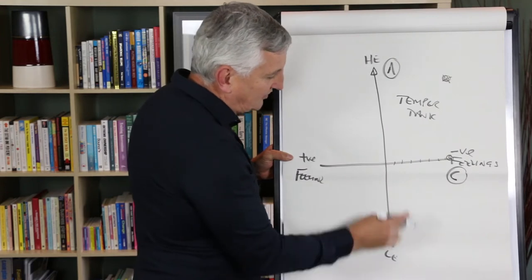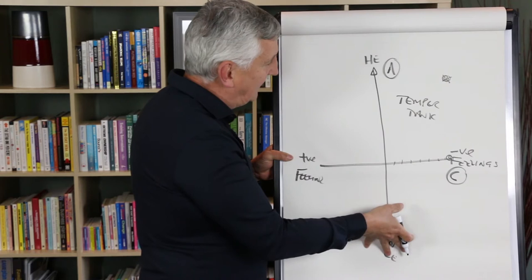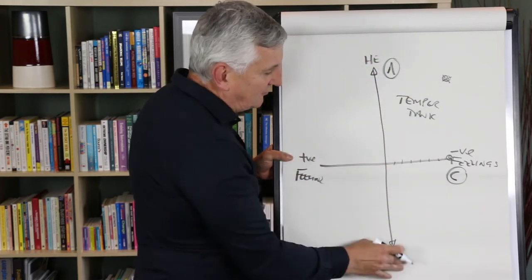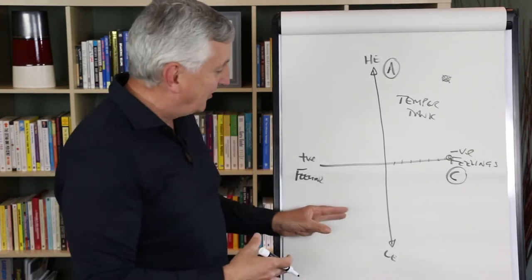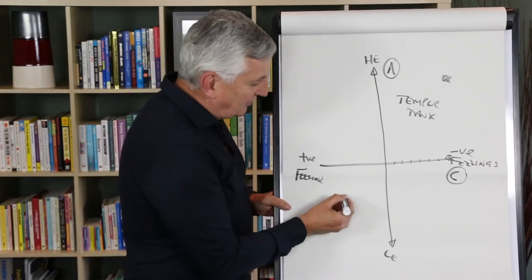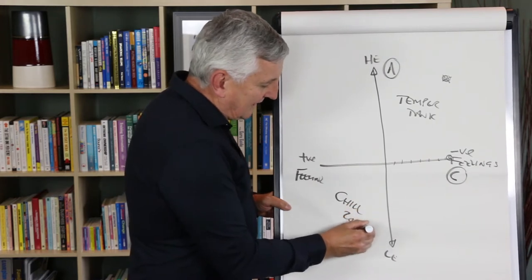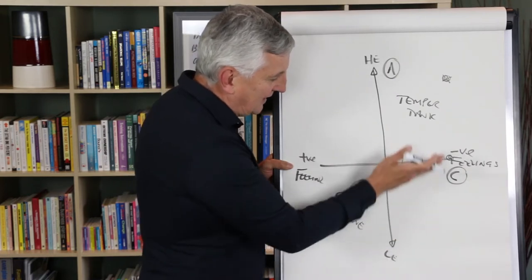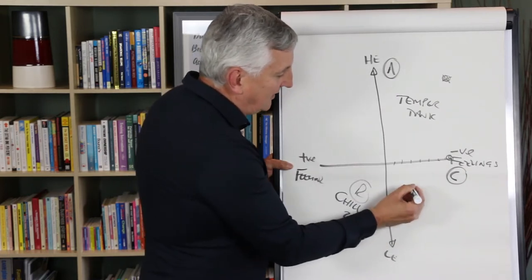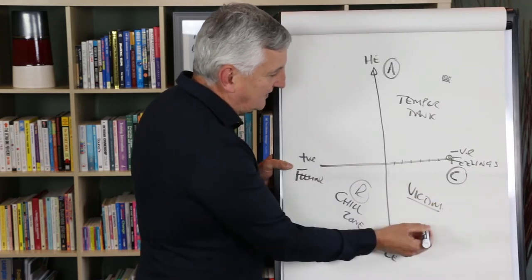Down here of course is where I've got a low energy so my parasympathetic system is driving a different set of chemistry in here, so the opposite to adrenaline over here. I'm relaxed, I'm on a beach, I'm chilled out and I'm feeling really positive so I'll be over here. We call this the chill zone or athletes would call that the recovery zone. Over here is quite interesting where I'm relaxed, I've got a low heart rate but I'm in what I call the victim mode which is not a good place to be as well.